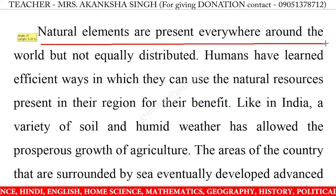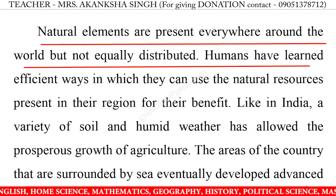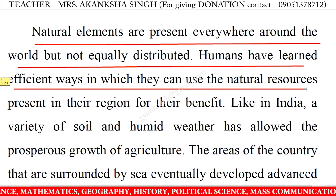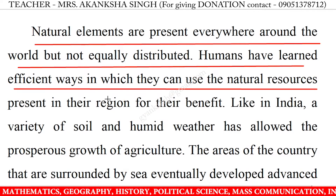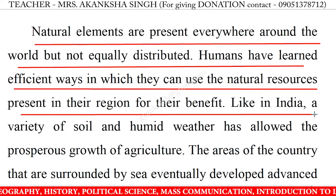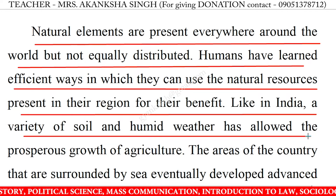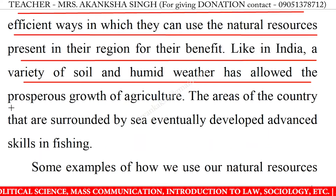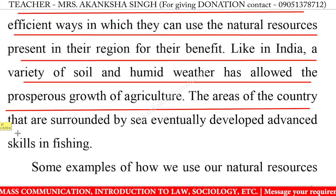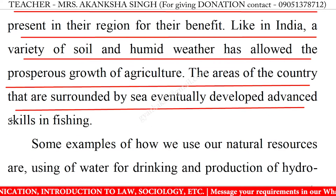Natural elements are present everywhere around the world but not equally distributed. Humans have learned efficient ways to use the natural resources present in their region. For example, in India, a variety of soil and humid weather has allowed the prosperous growth of agriculture, and areas surrounded by the sea developed advanced skills in fishing.